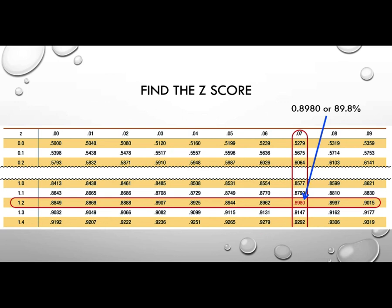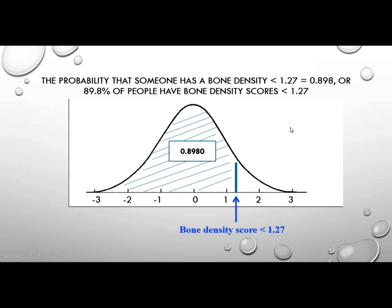So what do we do? We have to go into the back of the textbook. And the way it works is if you come over here, you see where it says 1.2. That's the Z-score. I come down to 1.2 and then I slide over to 0.07. So that's 1.27. And this area, this number, corresponds to 89.8% or 0.898. So what does that mean? It means that the probability that someone has a bone density score less than 1.27 is equal to 0.898 or 89.8% of the people will have a bone density score less than that.